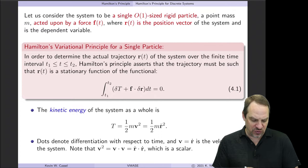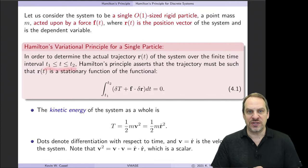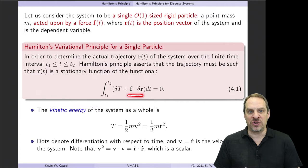Here's Hamilton's principle for that single particle. We're looking for the actual trajectory R as a function of T that the system takes — the path of the single object in some time interval T1 to T2. Hamilton's principle asserts that that trajectory R(T) has to be a stationary function of the following functional: it's the integral over the time interval T1 to T2 of the variation of capital T, which is the kinetic energy, plus the force vector dotted with δR, the variation of the position vector.